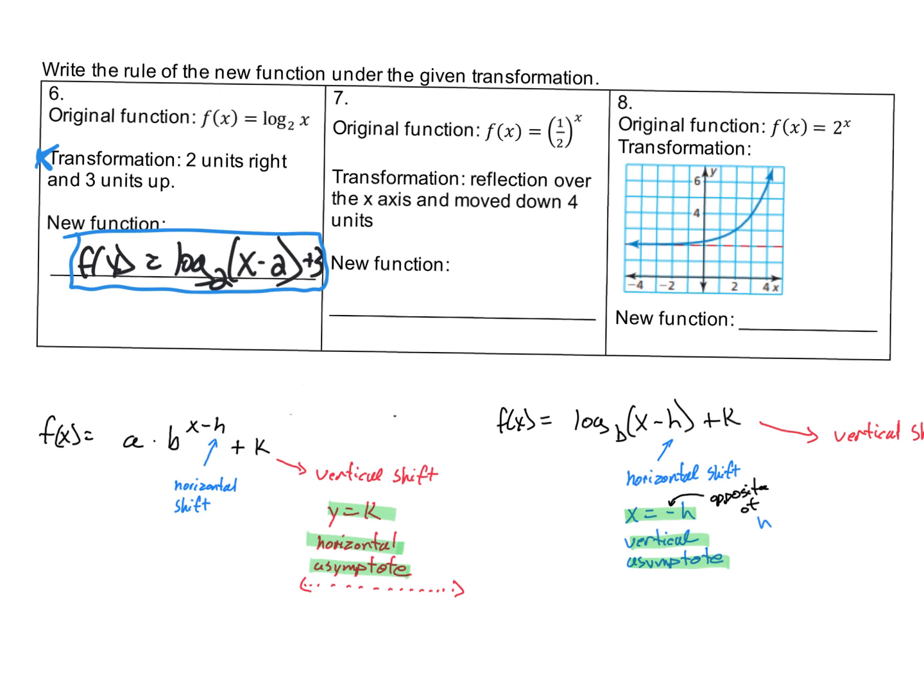In the exponential function, a·b^(x-h) + k, the x - h is the horizontal shift and the plus k is the vertical shift. For the reflection: if this 'a' value is negative, that's what creates the reflection over the x-axis.